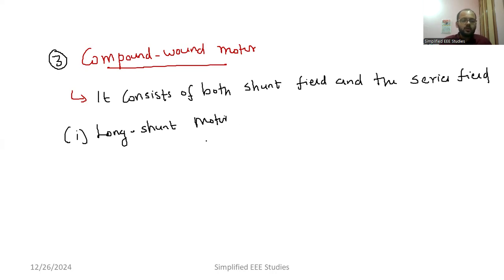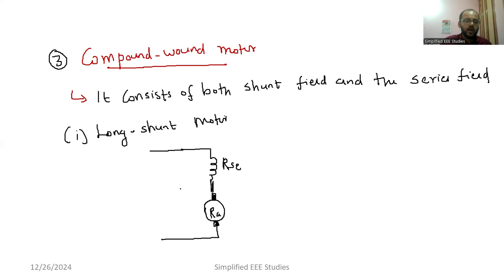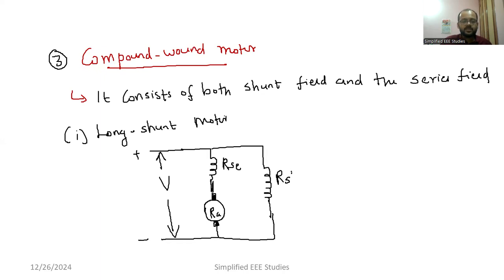For the long shunt motor, first draw the supply input, then draw the series field RSE, and next draw the armature with brushes and resistance RA. Apply the supply voltage V. In parallel, draw the shunt field winding RSH. The load current gets divided into two segments: one is ISH and the other is ISC. This is the specialty of the long shunt DC motor.